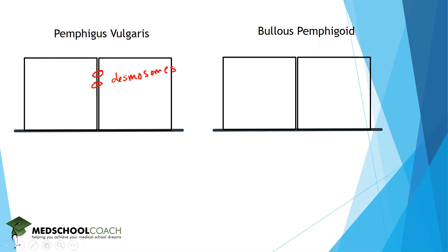In bullous pemphigoid the target is going to be the hemidesmosomes, which are going to be at the epidermal-dermal junction. A good way to remember this is that bullous sounds a lot like below, so the target is going to be below the cell.